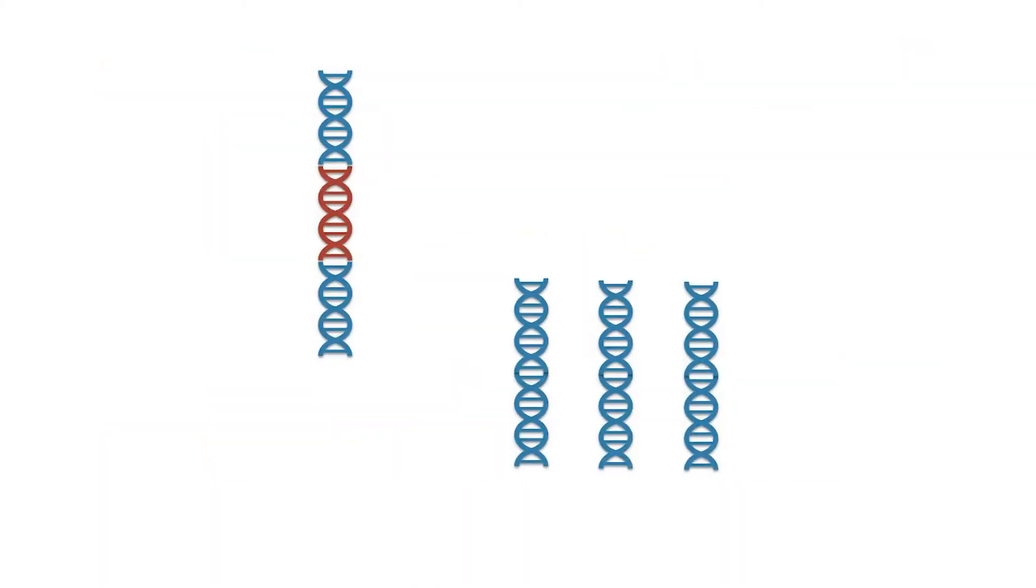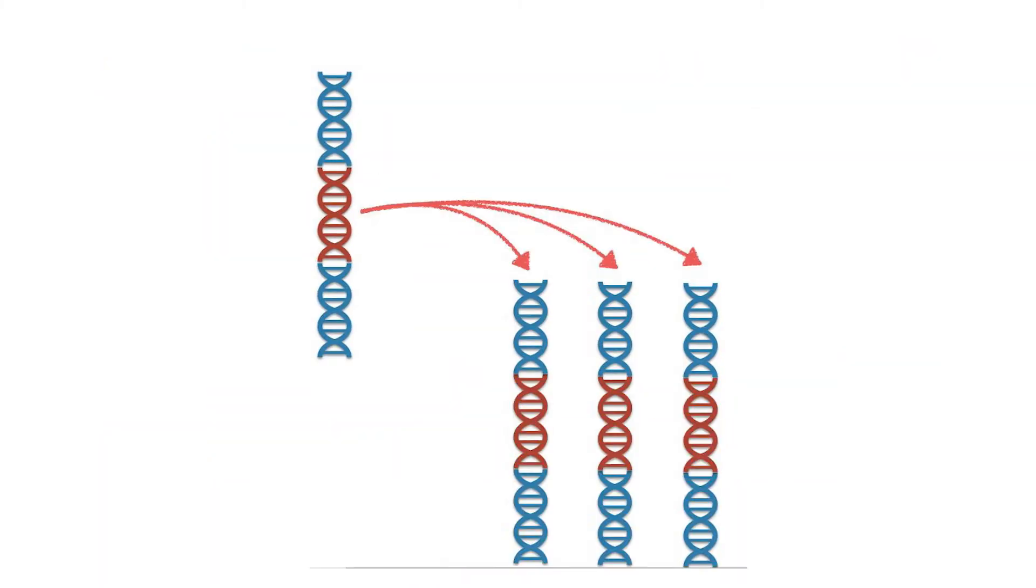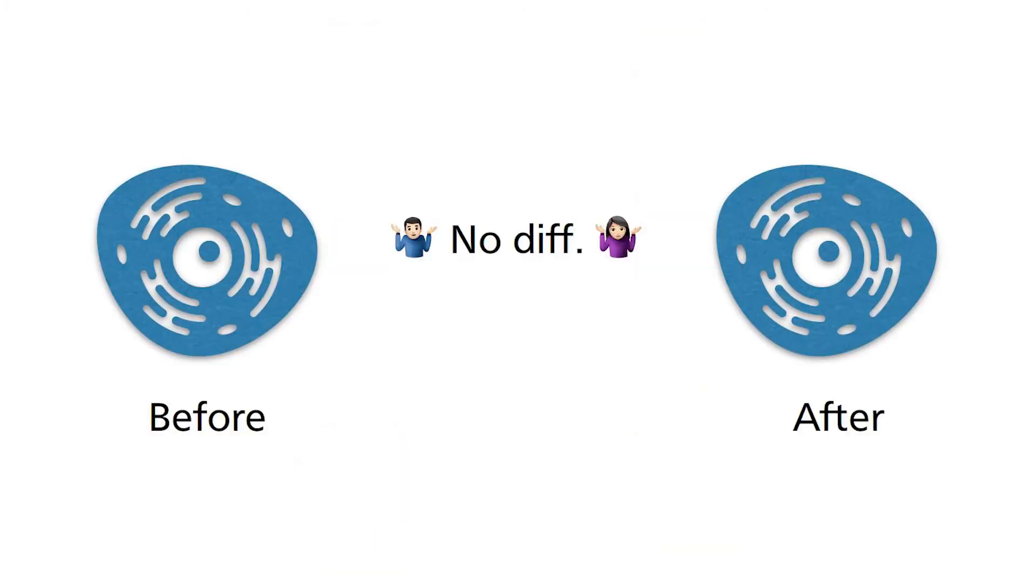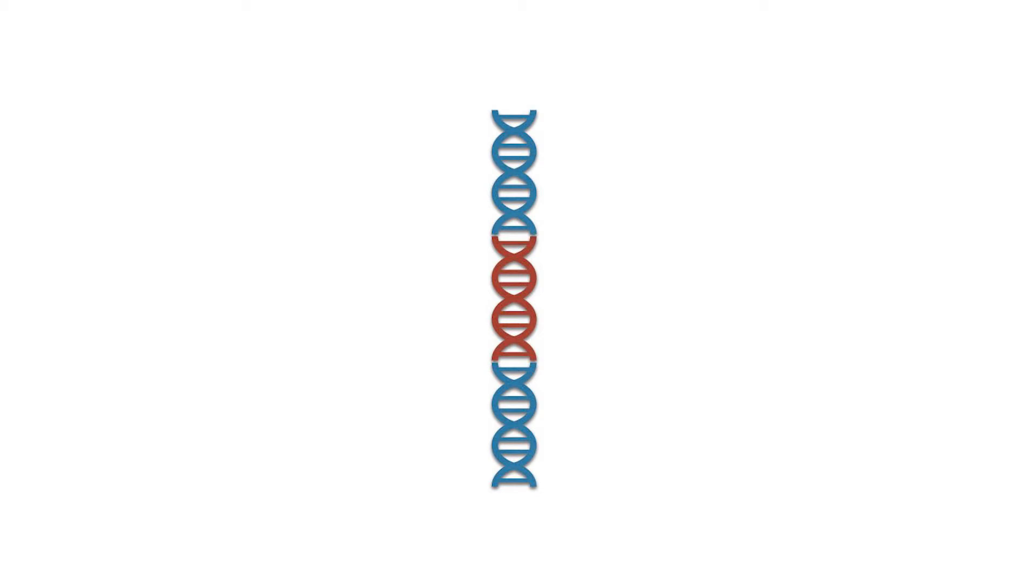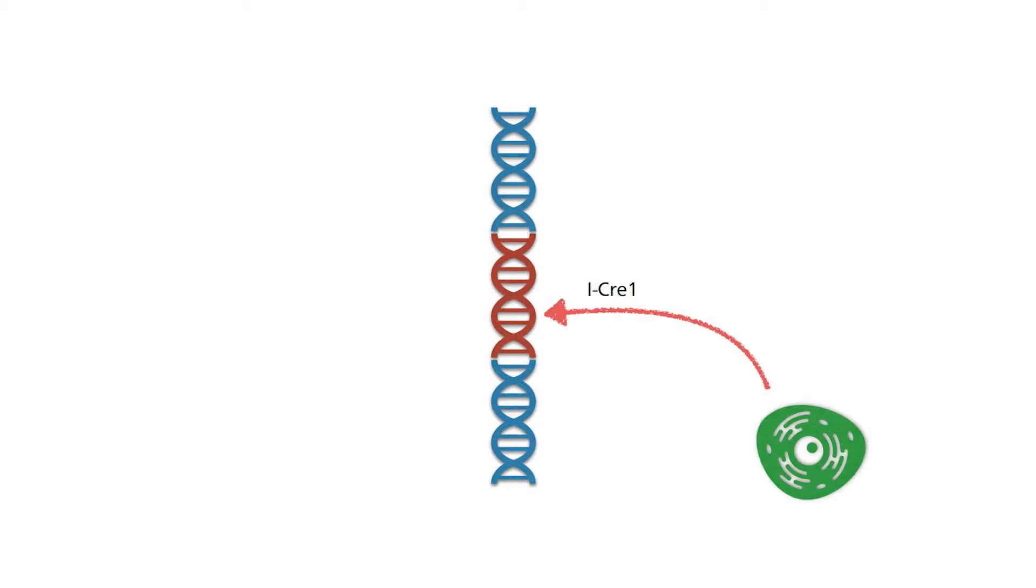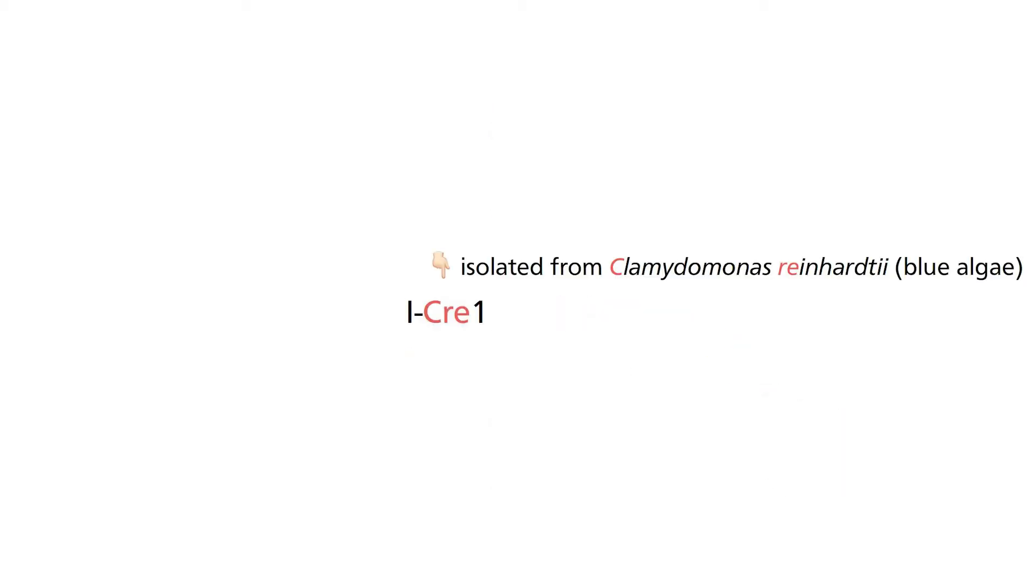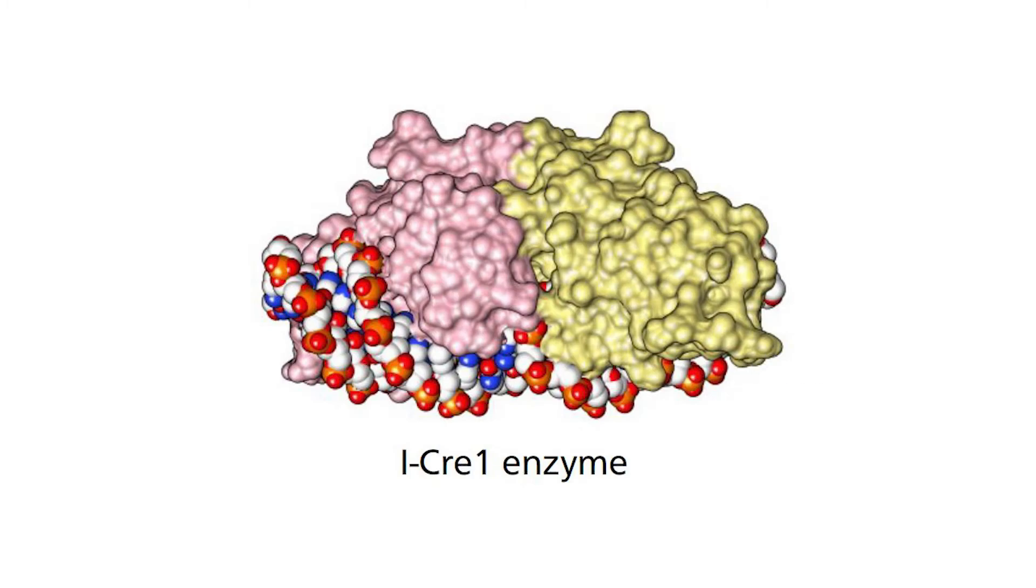This behavior is known as the selfish gene. So, what are selfish genes? These are genes which have the ability to drive their own propagation without known benefits or disadvantage to the organism. One such gene was isolated from a green algae known as iCree-1, which is the foundation of the Arcus Platform of Precision Biosciences.